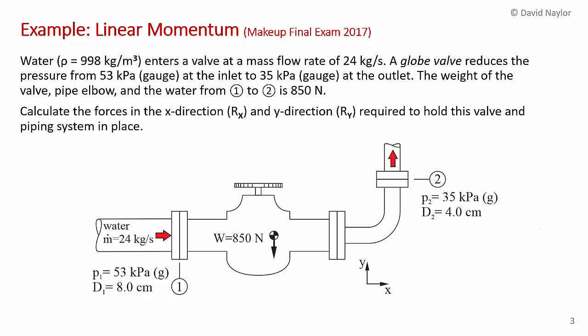We have water flowing through a globe valve at a mass flow rate of 24 kilograms per second. The globe valve reduces the pressure from 53 kilopascals gauge at the inlet to 35 kilopascals gauge at the outlet. The inlet is labeled 1 and the outlet is labeled 2.